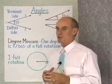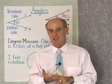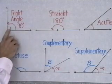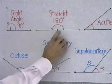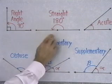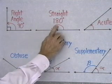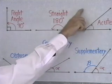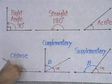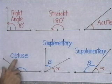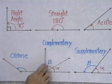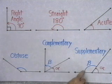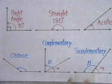We have some other designations for angles: right angle, straight angle, acute, obtuse, supplementary, and complementary. A right angle is 90 degrees. A straight angle is half a full rotation — 180 degrees. An angle between 0 and 90 degrees is called an acute angle. An angle bigger than 90 but less than 180 is an obtuse angle. Two angles that together add up to 90 degrees are called complementary angles, and two angles that add up to 180 degrees are called supplementary angles.